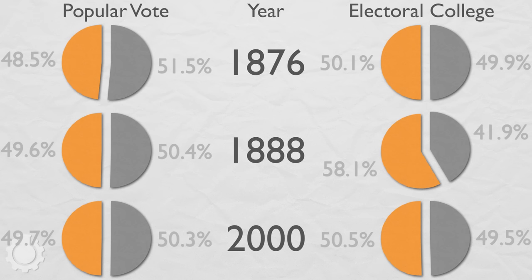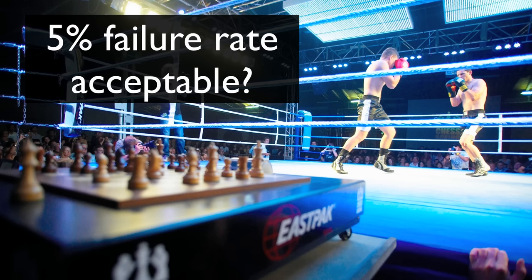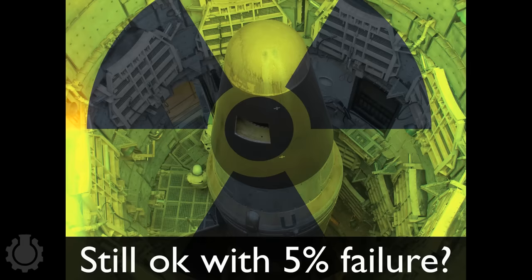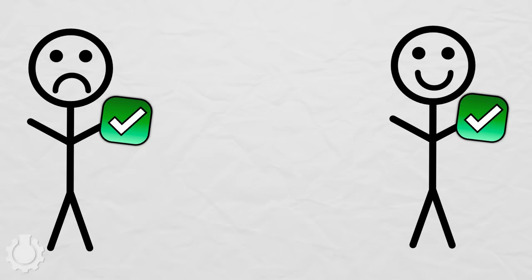Three errors in 55-plus elections is a failure rate of 5%. Would anyone tolerate a sport where, by a quirk of the rules, there was a 5% chance that the loser would win? Not likely. Given how much more important electing the president of the United States is, that's a rather dangerously high percentage of the time to get it wrong. If we abolish the Electoral College and simply let citizens vote for the president directly, all of these problems will go away and everyone's vote will be equal.